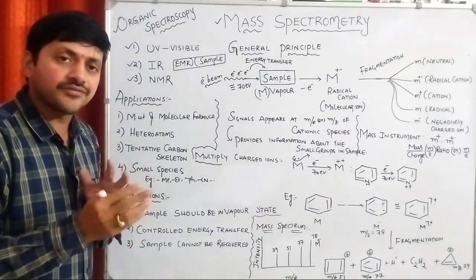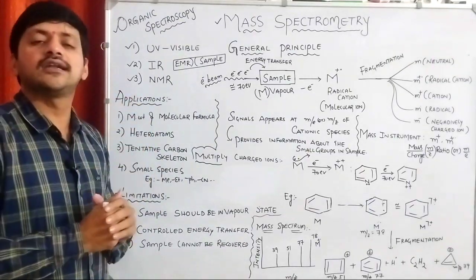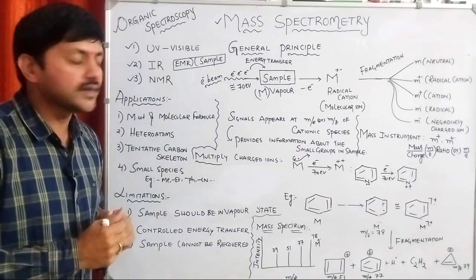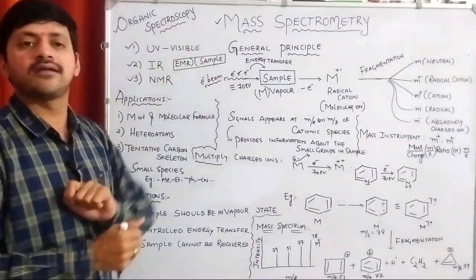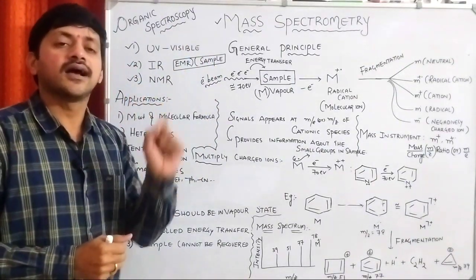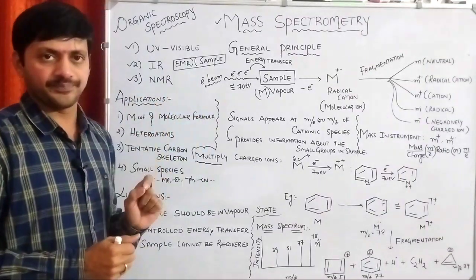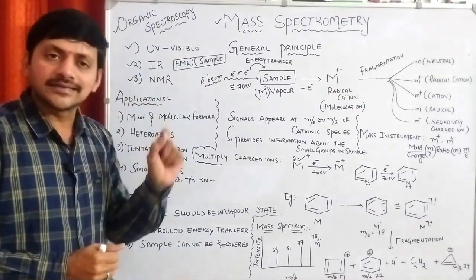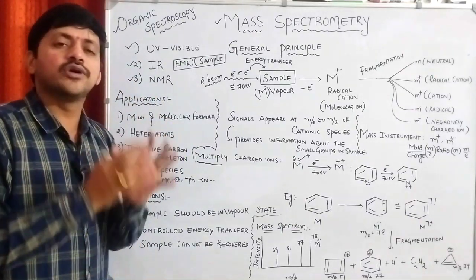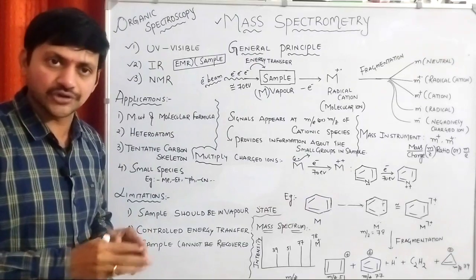In this way we get information related to the structure of the compound. But in case of spectrometry, what we are doing is using a high-energy electron beam. By the passage of this high-energy electron beam, we get information related to the structure of organic molecules.